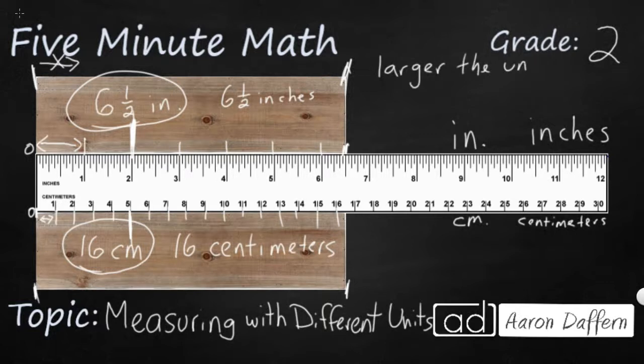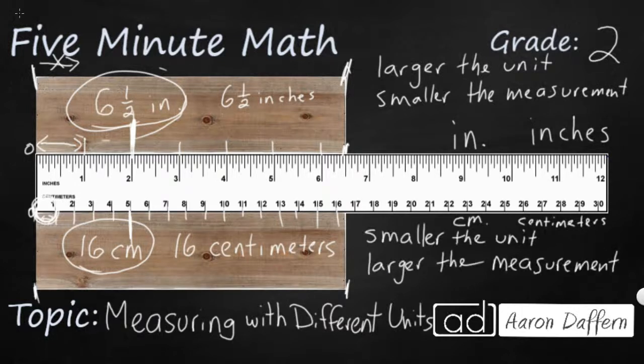Sometimes we have larger units. The larger the unit, the smaller the measurement, which means that our inch is a larger unit. The inch takes up about two and a half centimeters. If I am going to measure with that larger unit, that inch, my measurement is going to be smaller because it's only going to take six and a half inches. But if I get a smaller unit, like a little tiny centimeter down here, I'm going to end up with a larger measurement, like sixteen centimeters. As my units get smaller, my actual measurement gets larger.